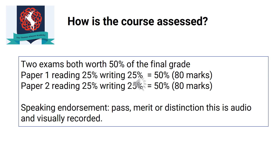For Paper 2, students write a letter or a newspaper article. The course is assessed with two exams, both worth 50% of the final grade, covering reading and writing, and worth 80 marks each. There is also the speaking endorsement, which students must complete — it carries a 0% weighting on the GCSE and is marked by the teacher.